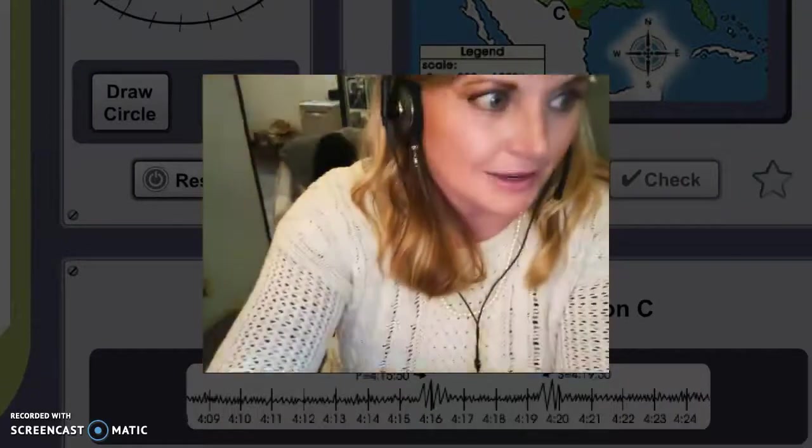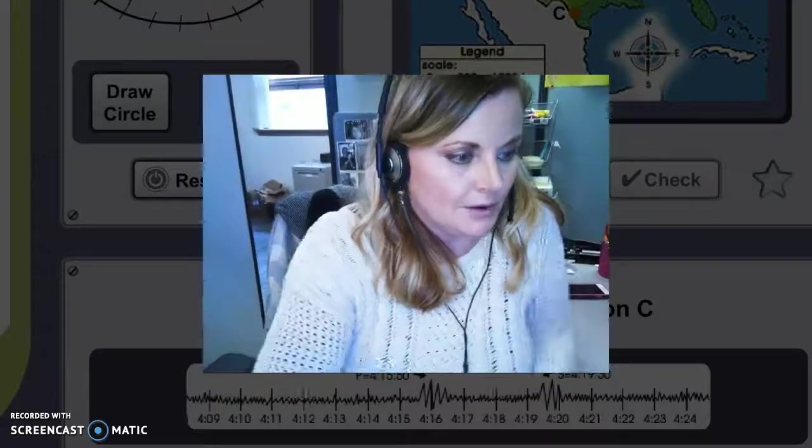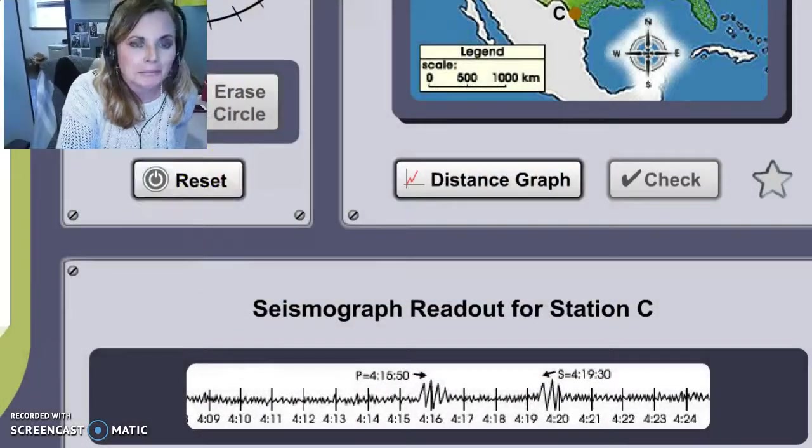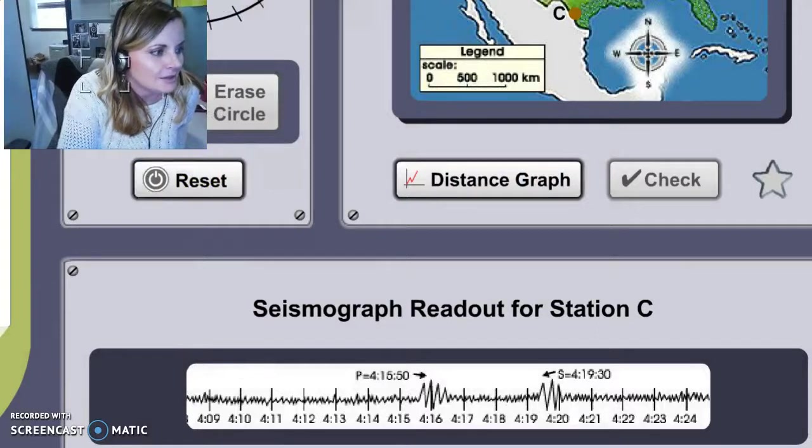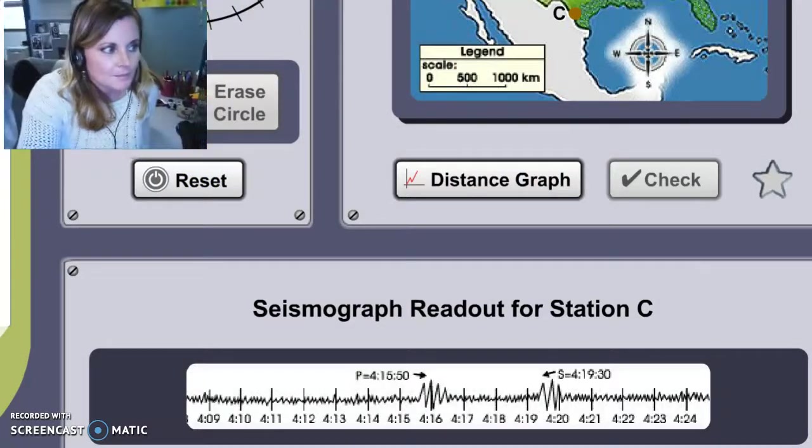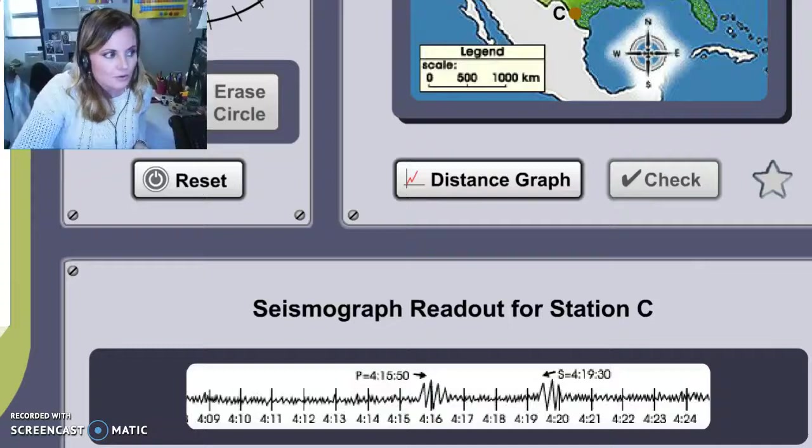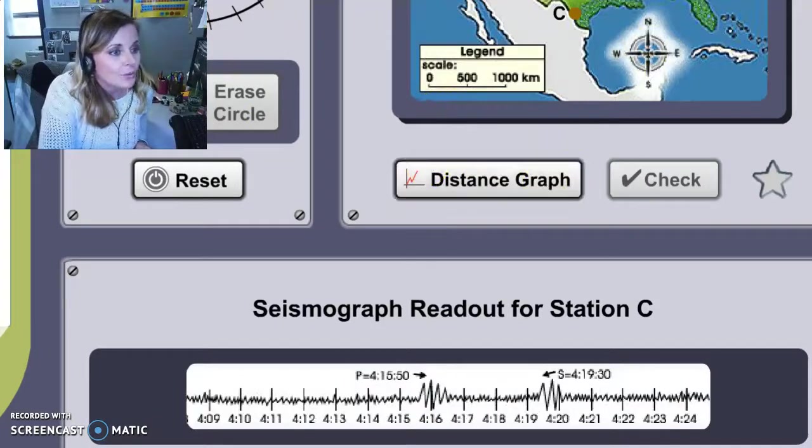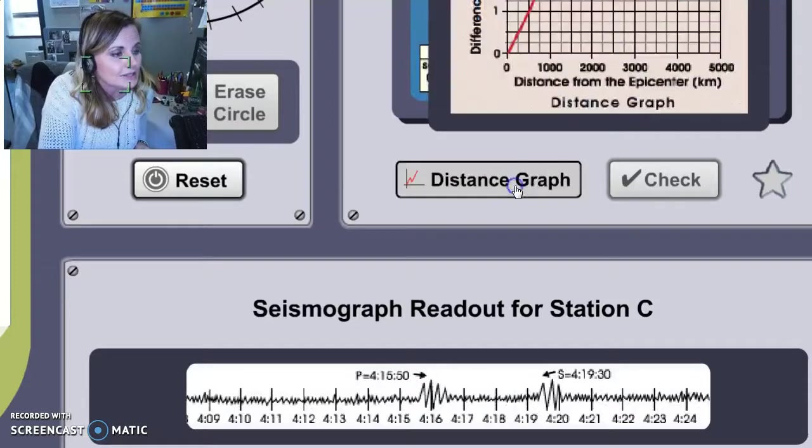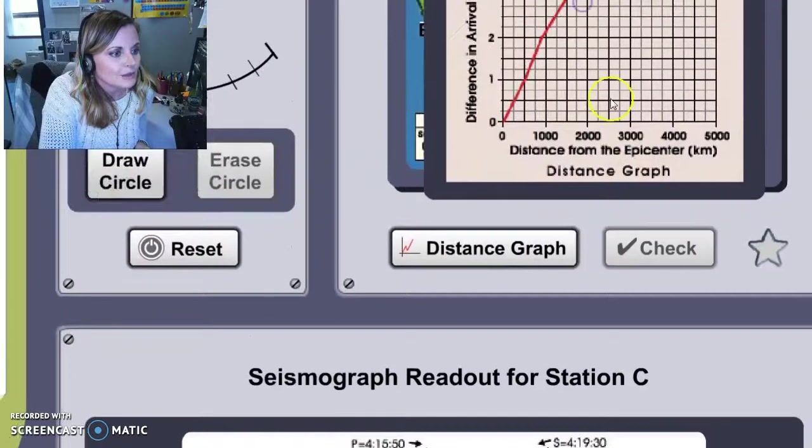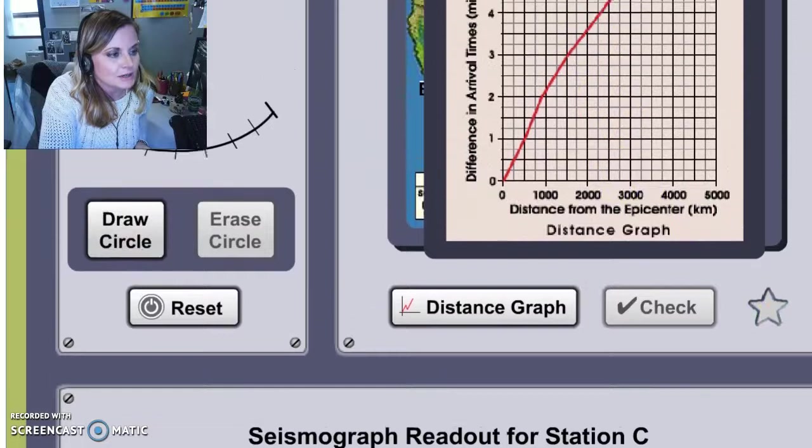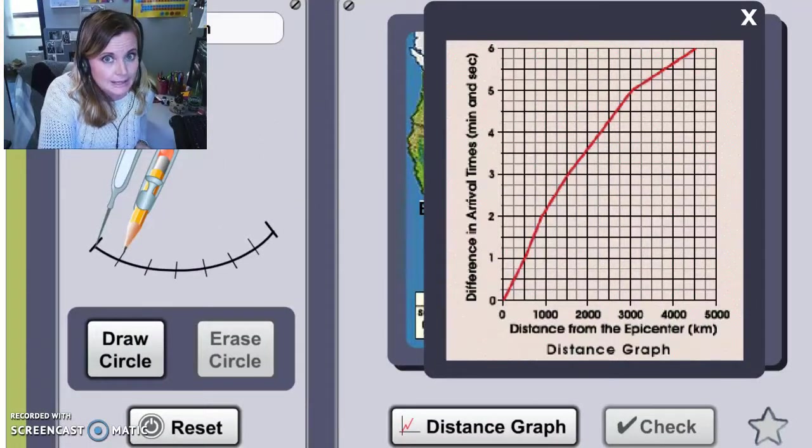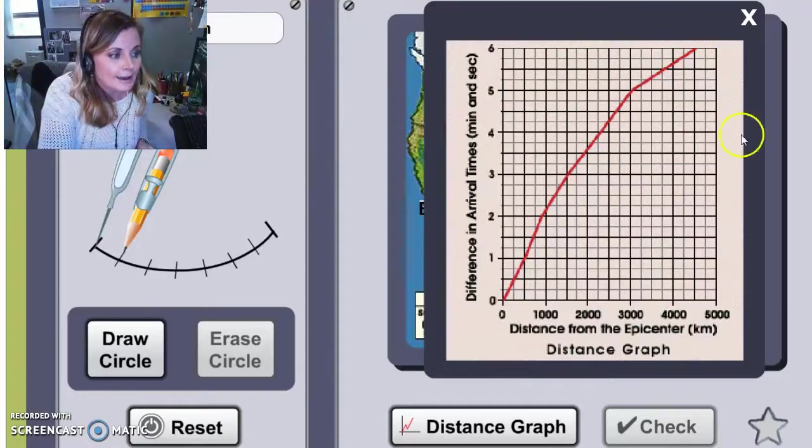Okay, so let's go ahead and kind of put this back up here. All right, so what we're going to do here is that 3 minutes and 40 seconds, we are going to use this distance graph. Click on where it says distance graph, and then I'm just going to kind of scroll up and we're going to find 3 minutes and 40 seconds over on the y-axis.